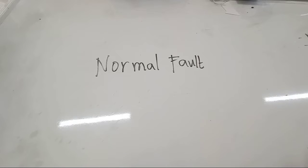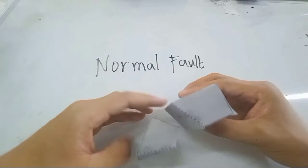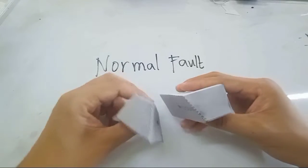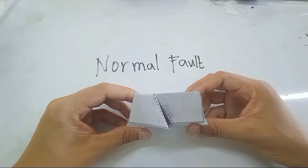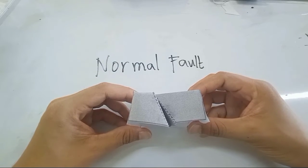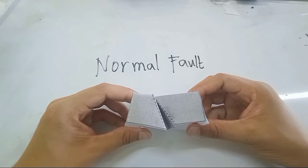Let's start with the normal fault. It is the most common type of fault and it is often found along divergent plate boundaries. So I have here a fault model. One of these is a hanging wall and the other one is what you call a foot wall.